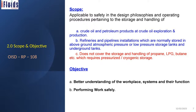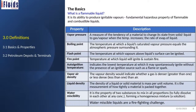The objective of this presentation is for better understanding of workplace systems, their function, and performing work safely. Before going further, there are some basic things to recap that are directly connected to terminal operations. Flammable liquid is characterized by its ability to produce ignitable vapors — this is the fundamental hazardous property of flammable and combustible liquids. Vapor pressure is a very important aspect, as are boiling point and flash point.